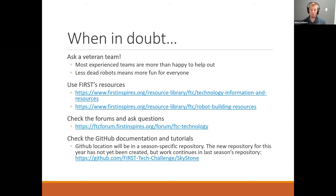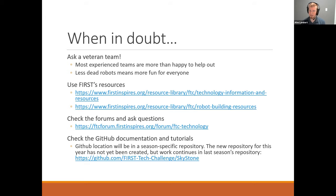When in doubt, rookie teams or teams with limited experience should feel free to ask a veteran team — most are more than happy to help and have a lot of great knowledge, sometimes more than the volunteers. There's also a list of resources available: the FIRST Inspires Resource Library for technology and robot building, the Robot Wiring Guide, the FTC Technology Forum, and the GitHub repository — which last year was changed to a season-specific repository.